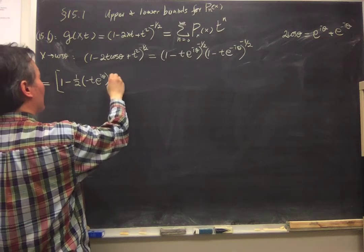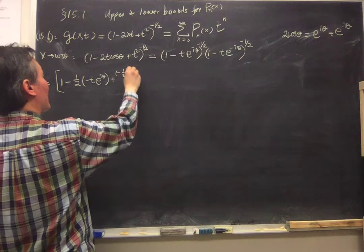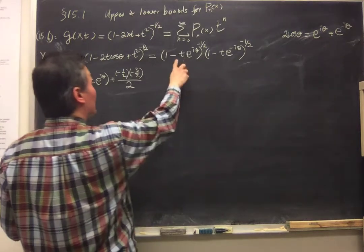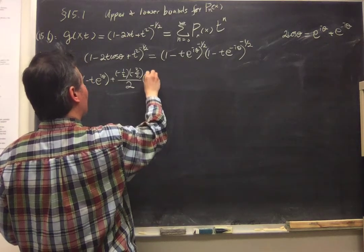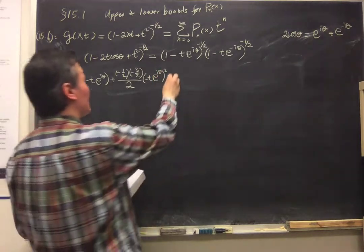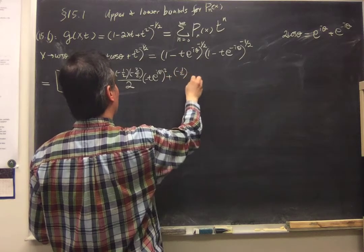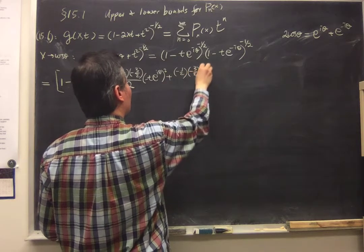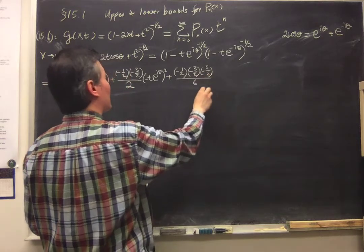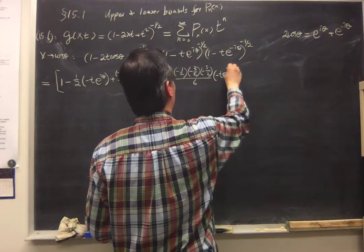The second order term is minus one-half times minus three-halves divided by 2 factorial, and we square up that: minus T e to the i theta squared. The next order term is minus one-half times minus three-halves times minus five-halves over 3 factorial, giving the third order term with minus T e to the i theta cubed.